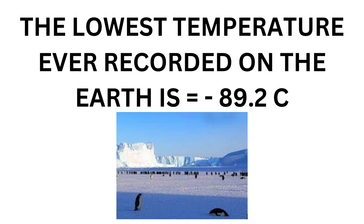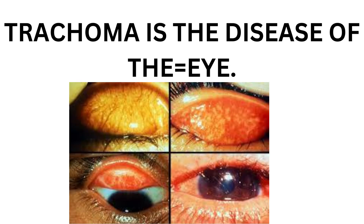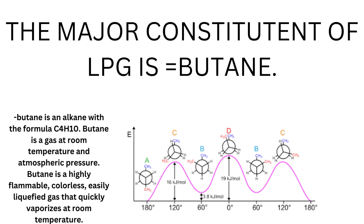The lowest temperature ever recorded on earth is minus 89.2 degrees centigrade. Bone ash contains calcium sulfate. Trachoma is a disease of the human eye. PVC — polyvinyl chloride — is obtained by the polymerization of vinyl chloride. The major constituent of liquefied petroleum gas is butane.